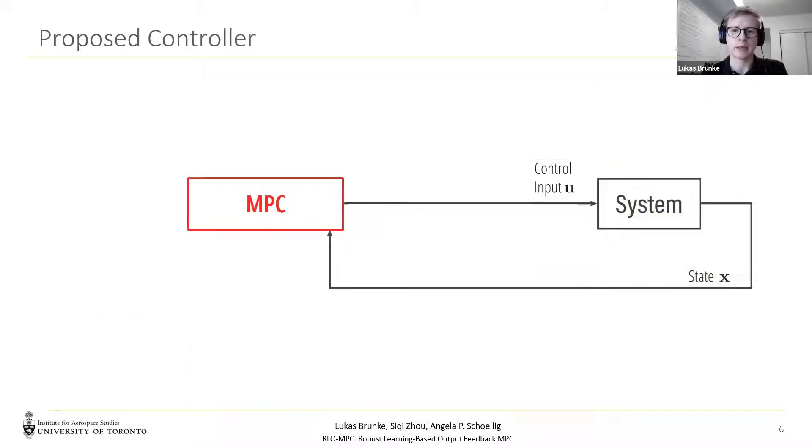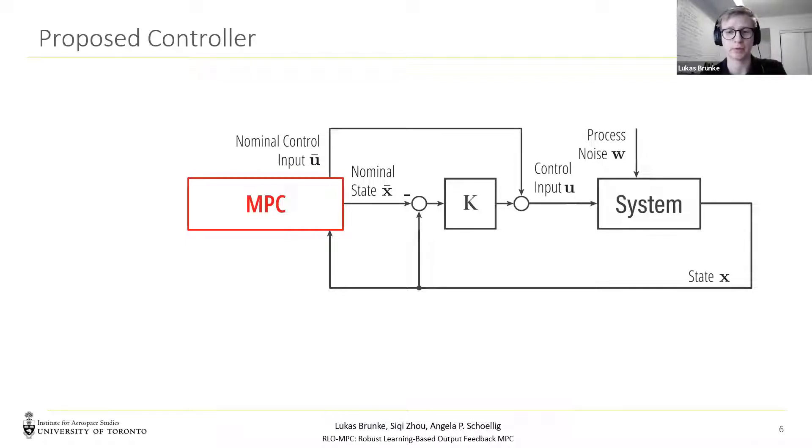In most real-world applications, there is a mismatch between the nominal model of the MPC and the true model of the system. This can be characterized by process noise W. In this case, we must account for the noise to still achieve constraint satisfaction. One approach to deal with this is using a pre-stabilizing controller K. It guarantees that the error between a nominal noiseless state, here x bar, and the true state is bounded. And this is referred to as robust MPC.